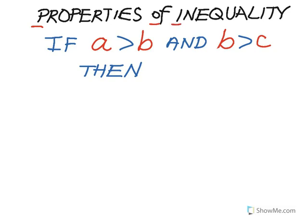The first property of inequality is this: if A is greater than B and B is greater than C, then what conclusion can you make? Well, if A is greater than B and B is greater than C, then A, logically, must be greater than C.